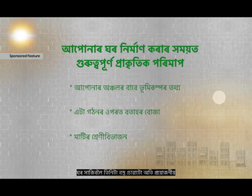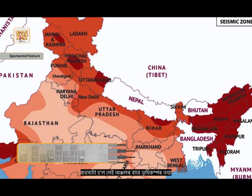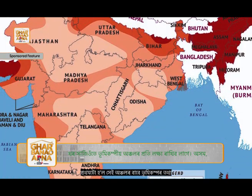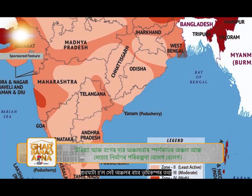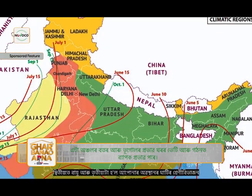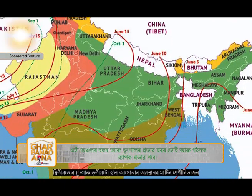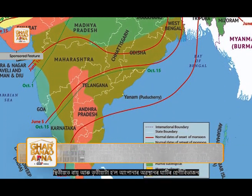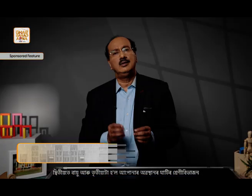There are three important parameters when you are building your house. First is the seismic data in your region. Next is the wind loading that you need to consider. And third is the soil classification in your location.